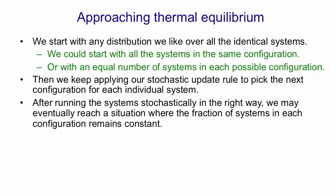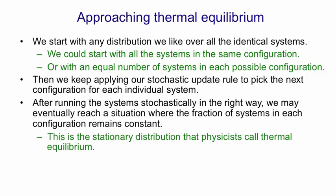After we've run the system stochastically in this way, we may eventually reach a situation where the fraction of the systems in each configuration remains constant. In fact, that's what will happen if we have symmetric connections. That's the stationary distribution the physicists call thermal equilibrium.